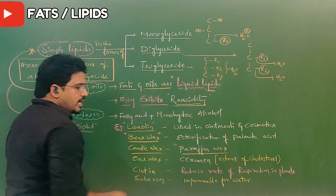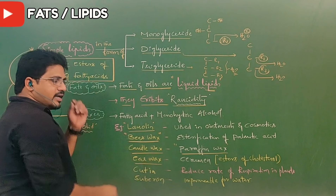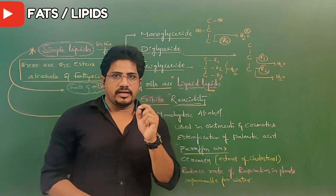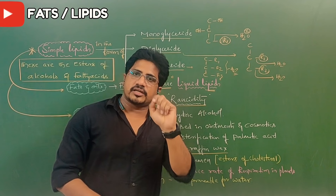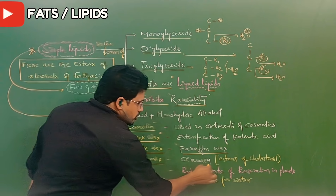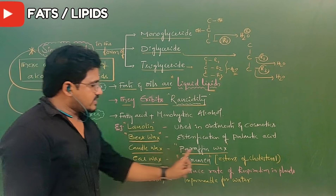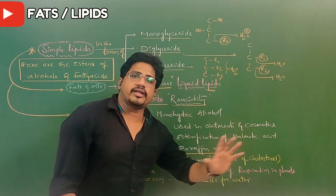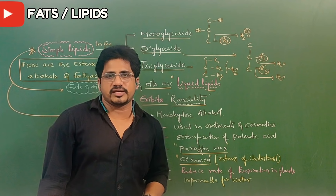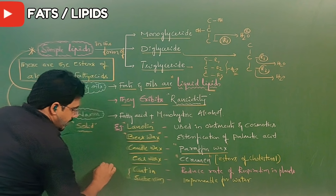Candle wax — the candles we see are very solid in nature. A candle is nothing but paraffin wax, which is also created from plants. Ear wax: when we clean our ears, a solid brown-colored component is observed. This is called ear wax, also called cerumen. Cerumen is an ester of cholesterol that forms a structure in the ear.